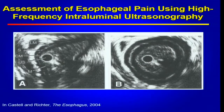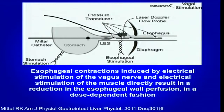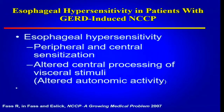This data concerns sustained longitudinal muscle contractions as a result of reflux in patients with NCCP. In an animal model study, esophageal contractions induced either by electrical stimulation of the vagus nerve or direct electrical stimulation of the muscle resulted in reduction of esophageal wall perfusion in a dose-dependent fashion. This could occur in response to acid reflux, potentially suggesting that some patients develop local ischemia leading to chest pain.